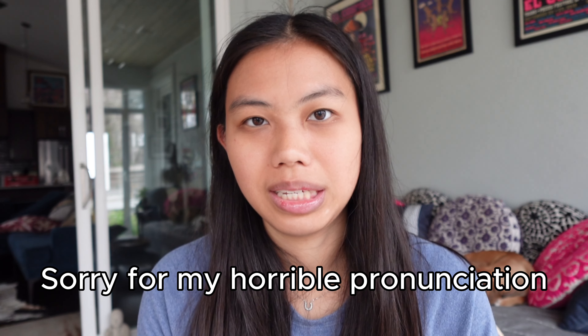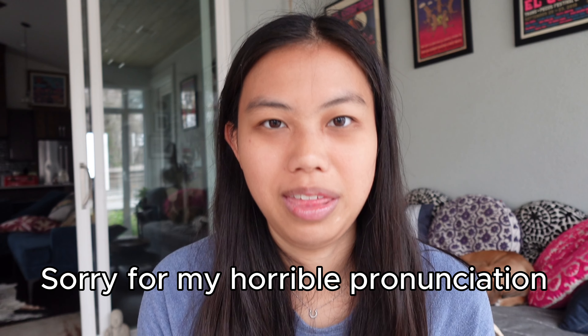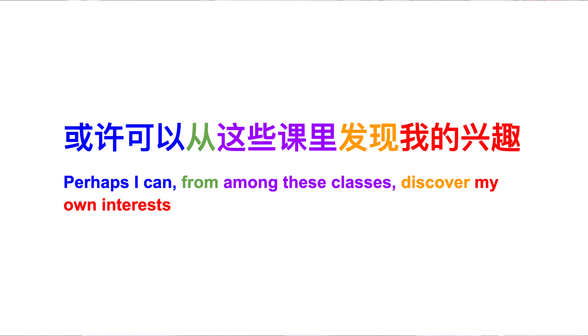Here's an example of a more complicated sentence from one of my classes. Perhaps I can discover my own interest from among these classes. If I translated the Chinese directly word for word, it would be: 'perhaps I can from among these classes discover my own interests.' So it starts out the same but the middle and ending parts of the sentence are switched. I think this structure is trying to emphasize the 'my interest' part, which comes after the 的, but I'm not really sure.